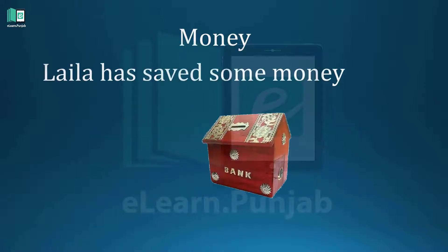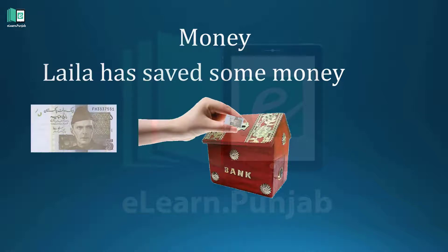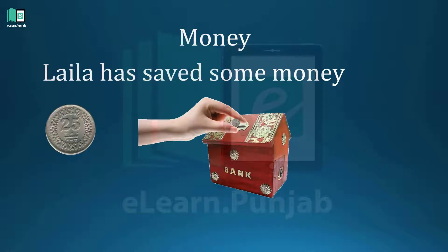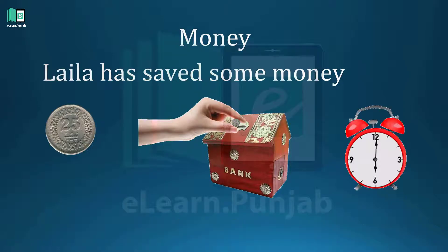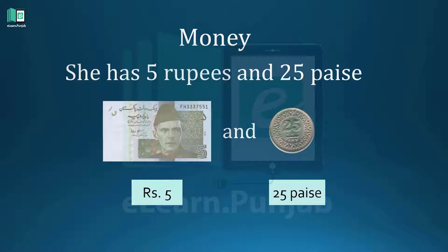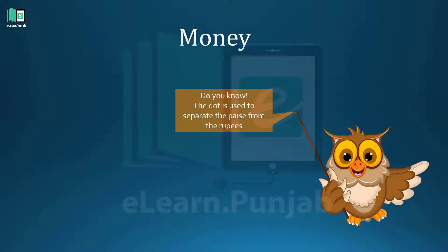Lila has saved some money in a money box. She has five rupees and twenty-five paisa. How much money does she have saved? She has five rupees and twenty-five paisa. Do you know the dot is used to separate the paisa from the rupees?